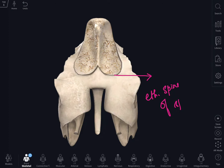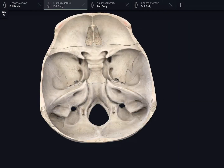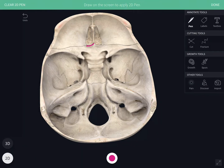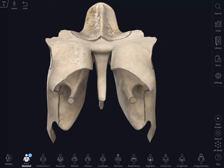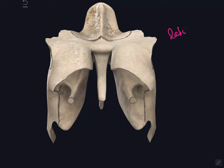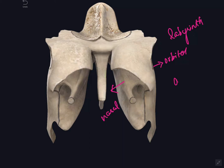In the cranial cavity view, you can see the posterior margin of the cribriform plate, which articulates with the ethmoidal spine of the sphenoid bone. The labyrinth of the ethmoid bone is cuboidal, with an orbital plate laterally and a nasal plate medially. It consists of air cells arranged in groups — anterior, middle, and posterior — forming the anterior, middle, and posterior ethmoidal air sinuses.